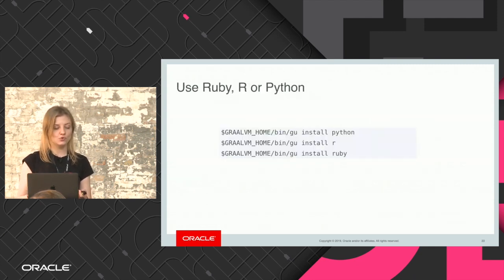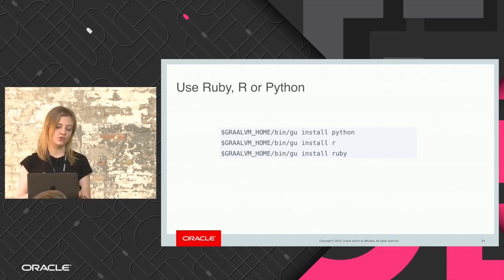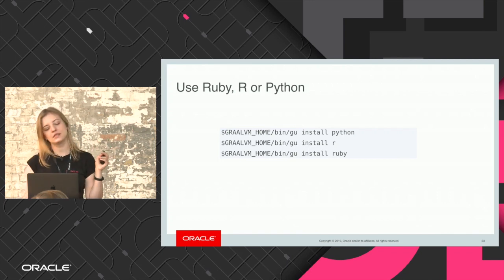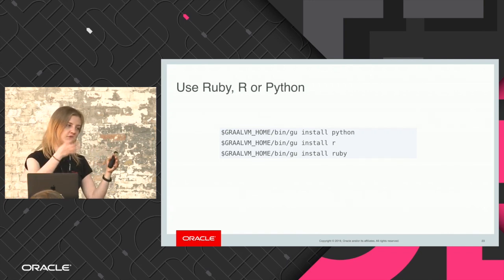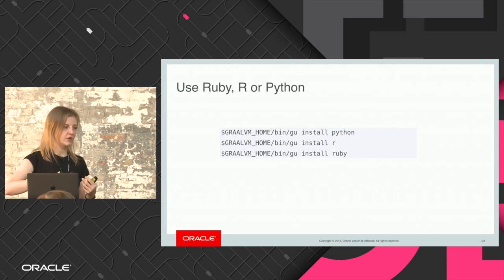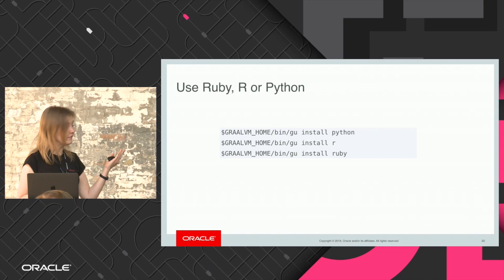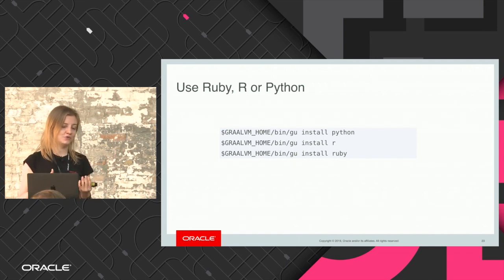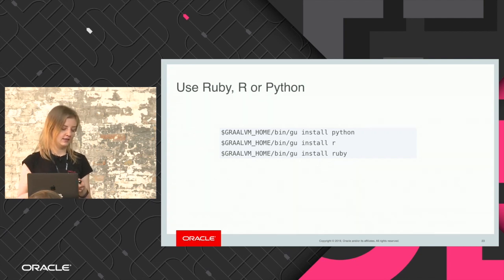To use Ruby, R, or Python in GraalVM, you just run one simple command in your command line. What you get out of the box when you download GraalVM is things like Java, JavaScript, and LLVM. If you are interested in these particular languages you need to install them additionally, which is fairly quick, and as you no longer need them you can uninstall them just as easily and keep on working with what you need.